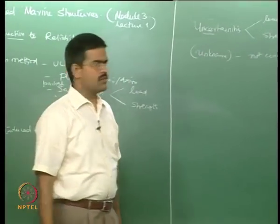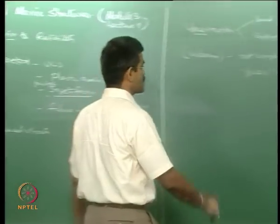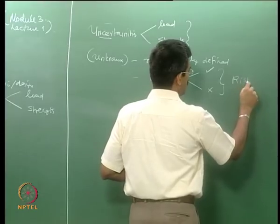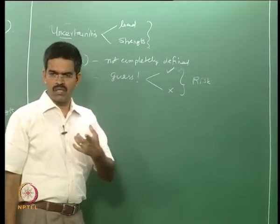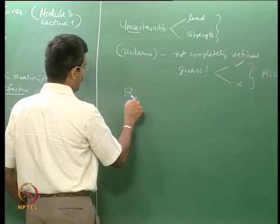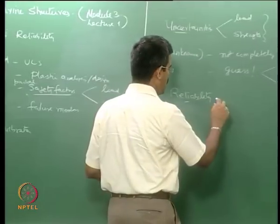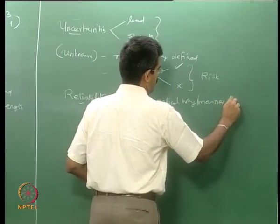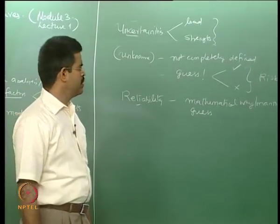Something not completely defined will always have a guess, and that guess can sometimes go right and sometimes go wrong. It means there is always a risk associated with any parameter that is guessed. But can this risk — or this guess — be mathematically handled? That is where reliability plays a role. In simple terms, reliability can be defined as a mathematical way or manner to handle a guess, which otherwise results in risk.